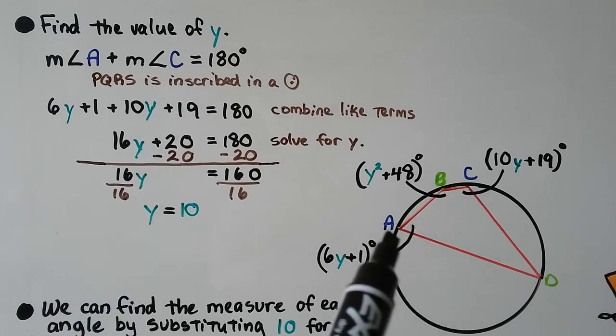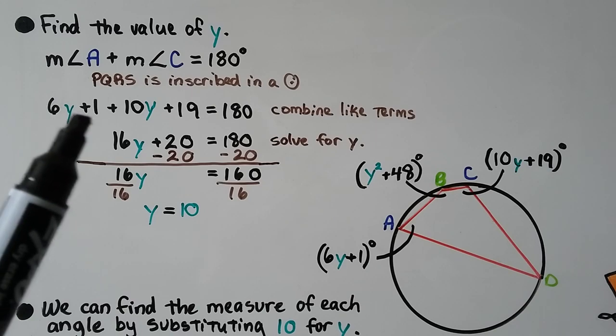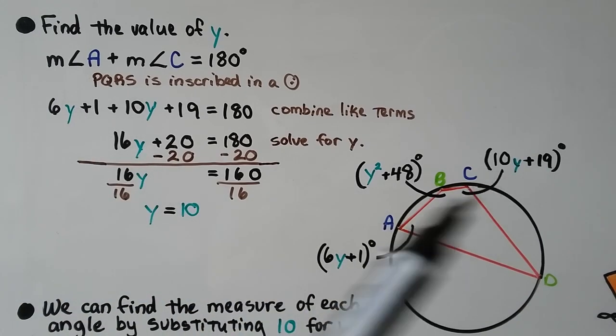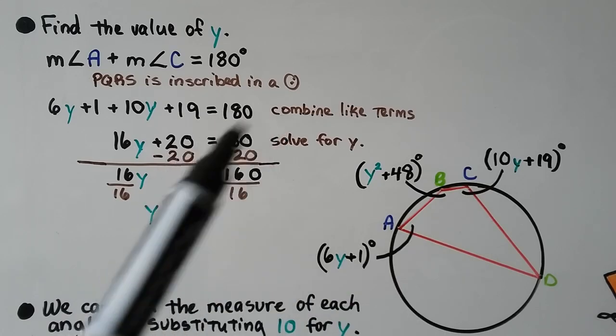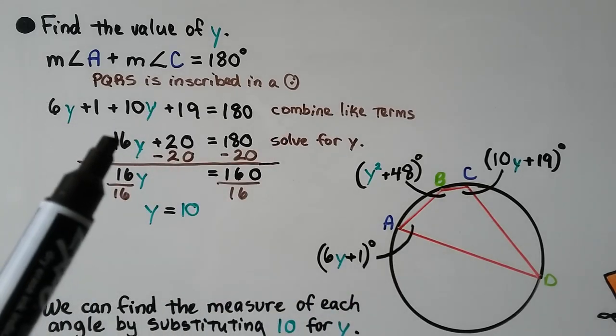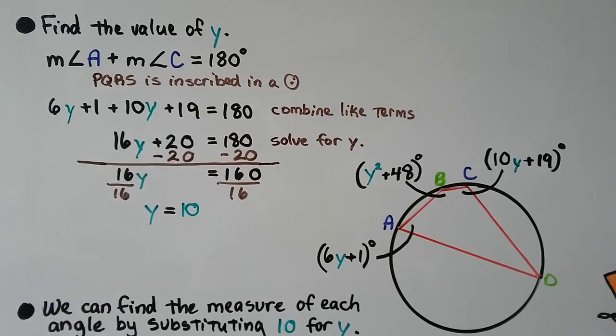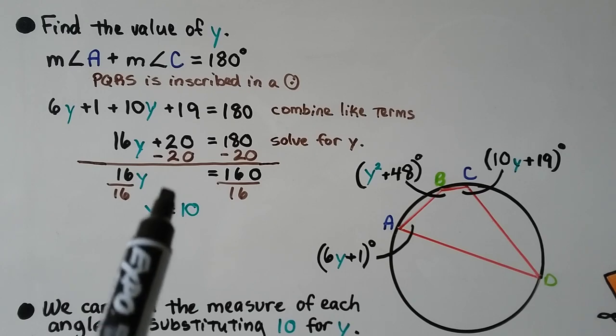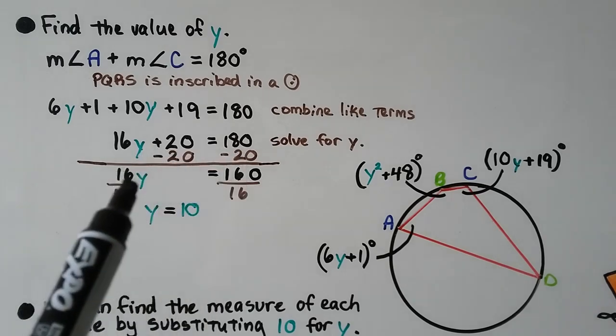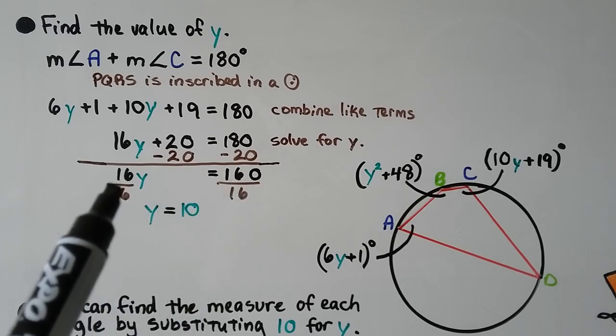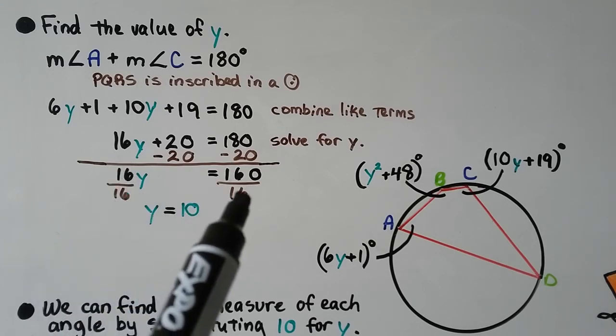6Y plus 1 plus 10Y plus 19 should equal 180. We combine like terms. We have 6Y and 10Y that gives us 16Y. We have 1 and 19 that gives us 20. We solve for Y. We subtract 20 from each side. We get 16Y equals 160. We divide both sides by the 16 coefficient, and we get Y equals 10.